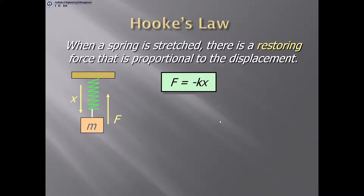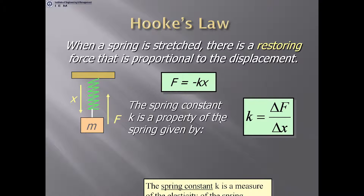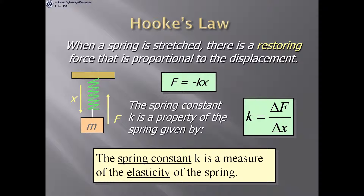Hooke's Law: when a spring is stretched, there is a restoring force proportional to the displacement, F = −KX. The spring constant K is a property of the spring, defined as K = ΔF / ΔX. The spring constant K is a measure of the elasticity of the spring.